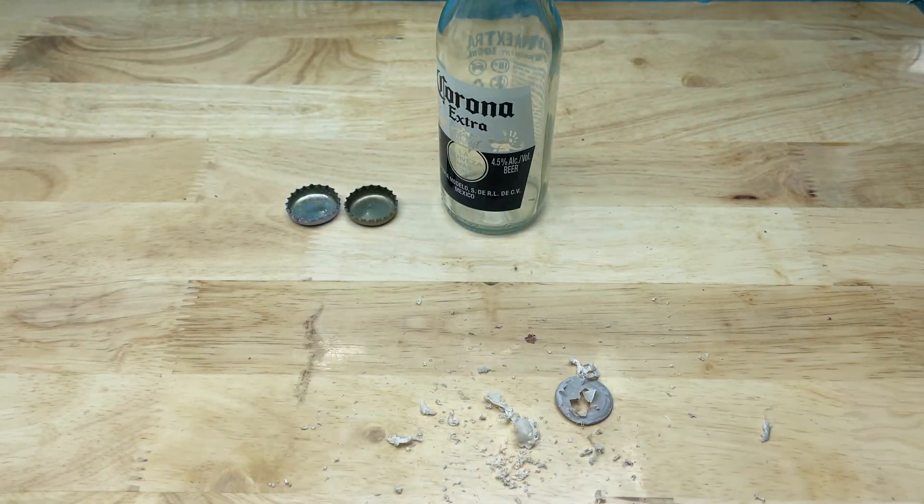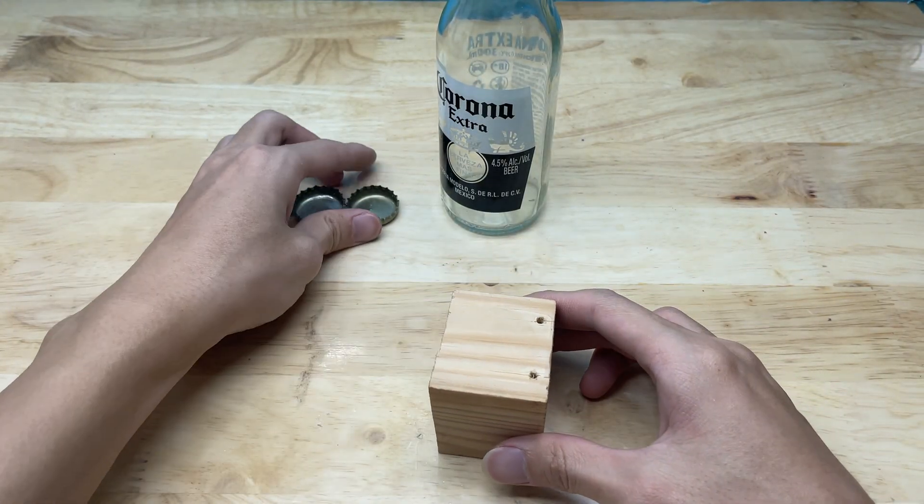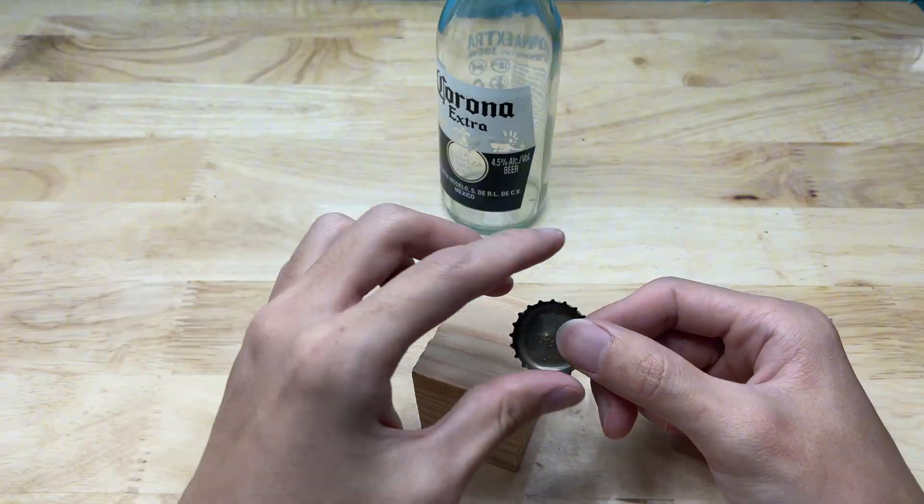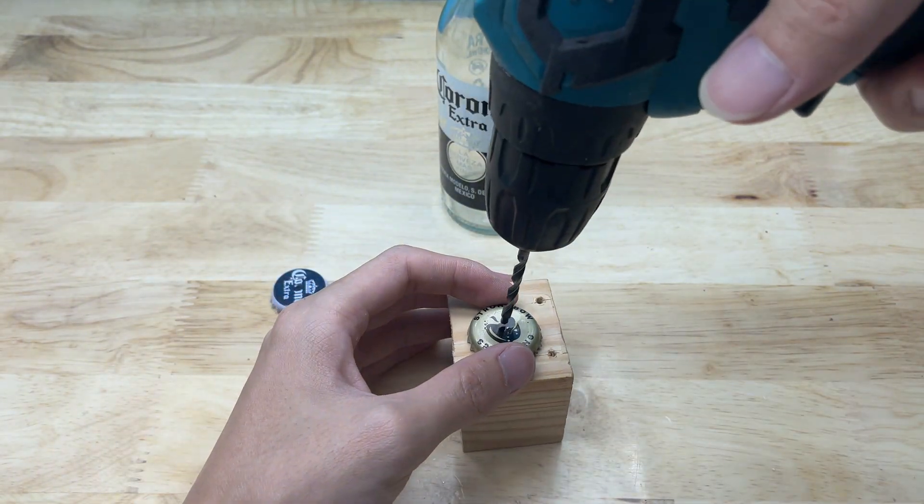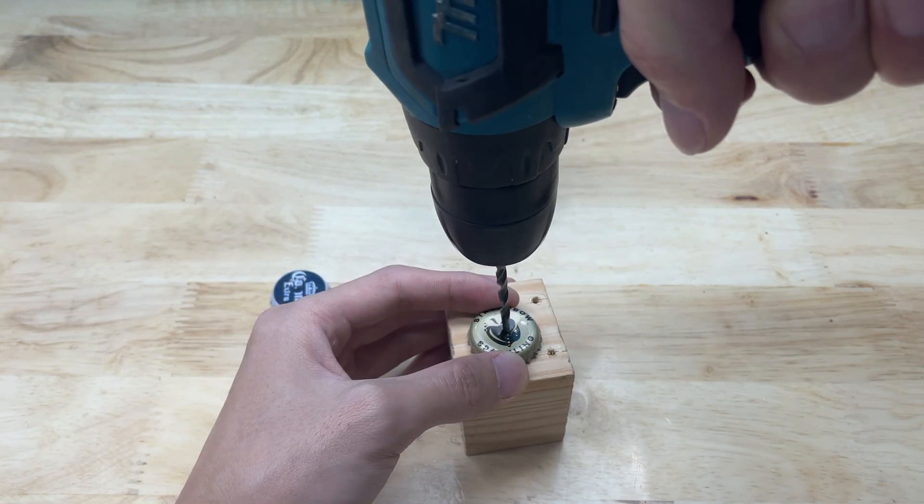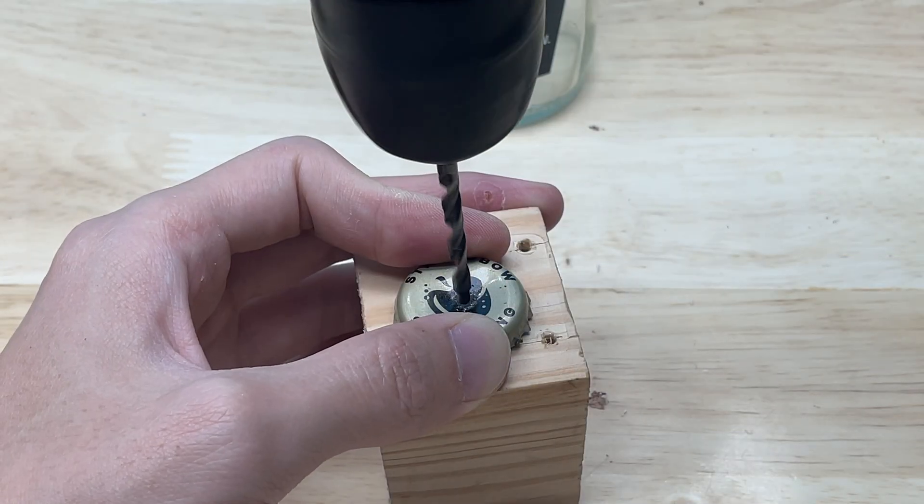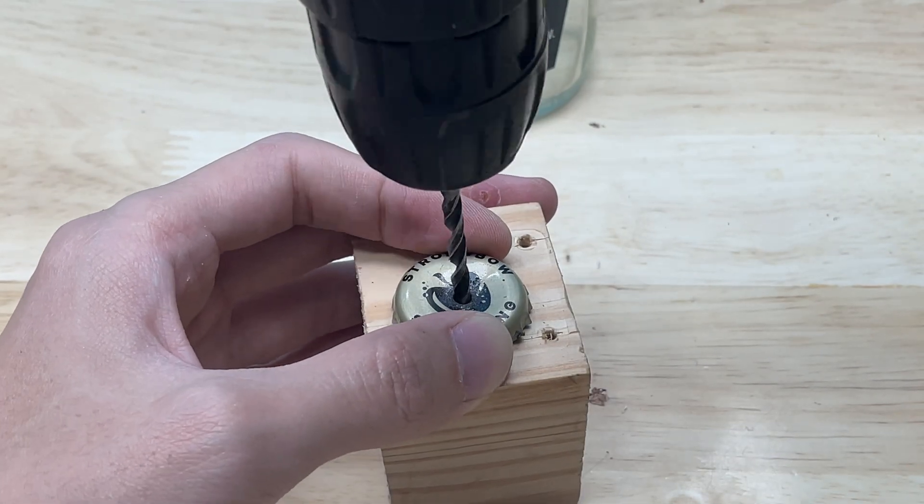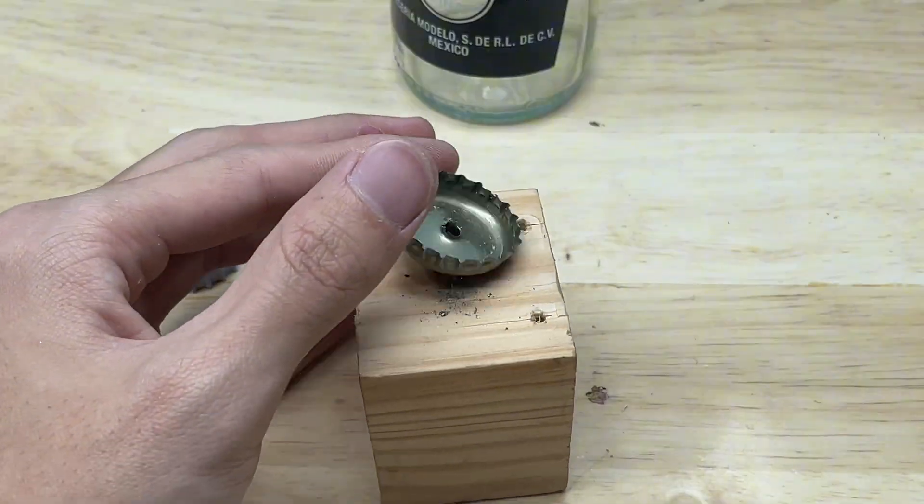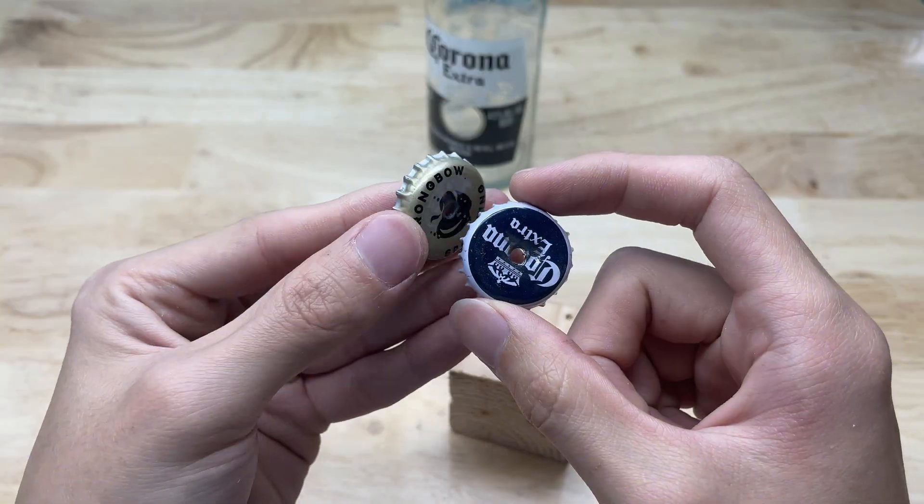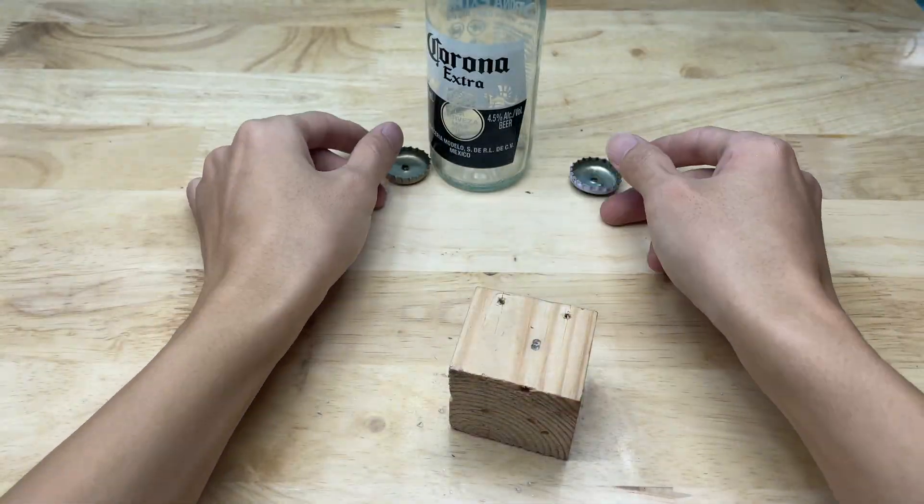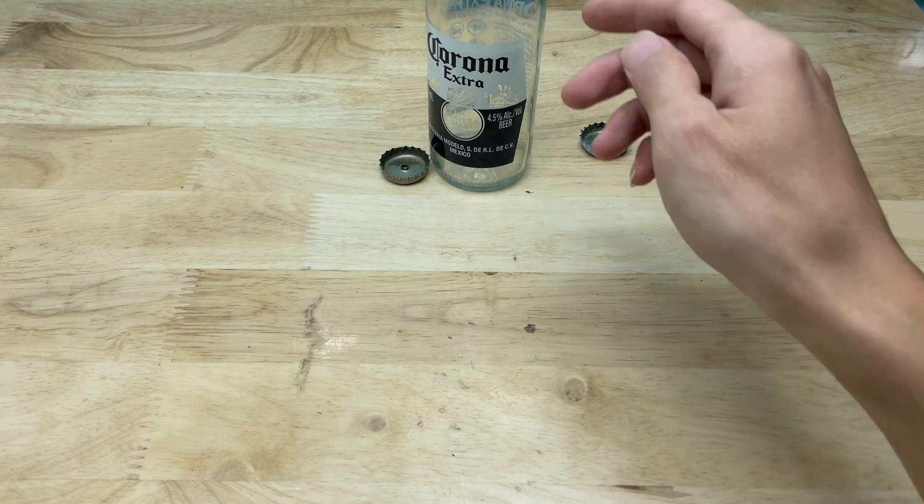After thoroughly cleaning the bottle caps, I will drill a hole in the exact center of each cap. This step needs to be done carefully so the hole is perfectly centered, ensuring the two caps are balanced and easy to assemble later. These drilled holes will serve as the main connection points, ready for installing an axle or attaching the next components.